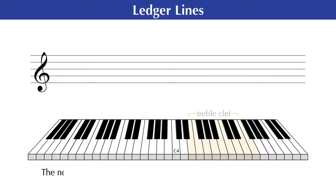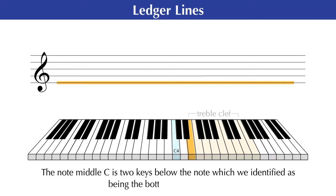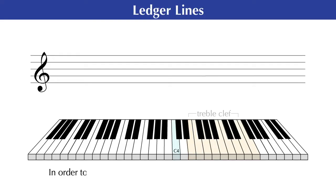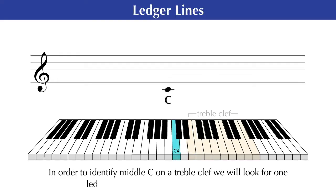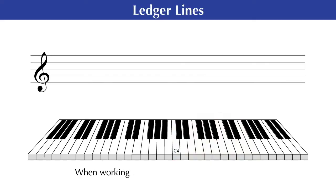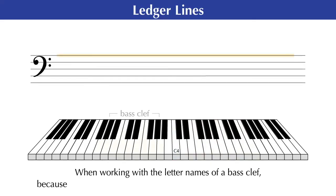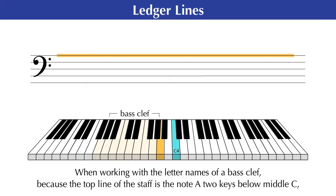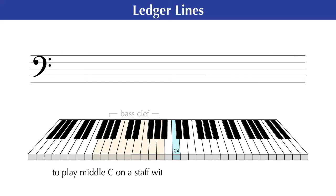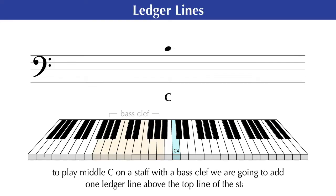Likewise, the note middle C is two keys below the note which we identified as being the bottom line of the staff. Therefore, in order to identify middle C on a treble clef, we will look for one ledger line below the bottom line of the staff. On the other hand, when working with the letter names of a bass clef, because the top line of the staff is the note A two keys below middle C, to play middle C on a staff with a bass clef, we are going to add one ledger line above the top line of the staff.